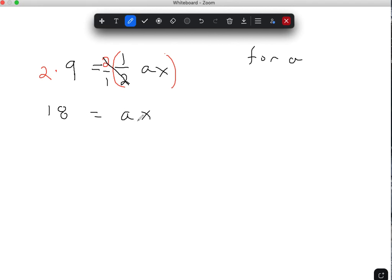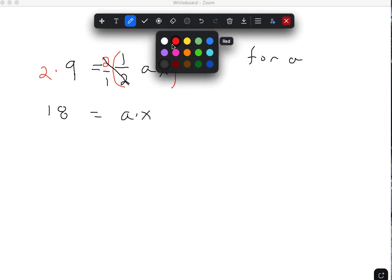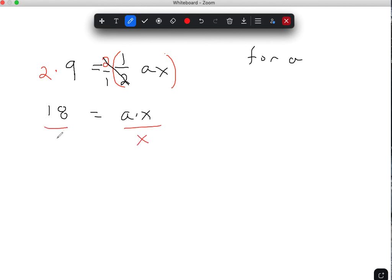And since I want to get a by itself, now I have to get rid of this x here, and the x is multiplying. And so you just have to think, if the x was adding, I would subtract. If the x was subtracting, I would add. If the x is multiplying, its inverse operation to that would be to divide it. So we're going to divide the x on both sides. And the reason is now these cancel, and we're left with that a all by itself.